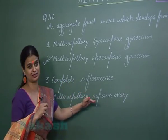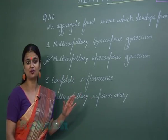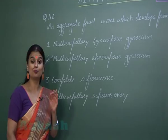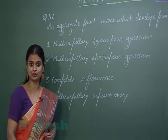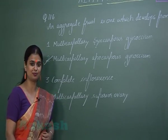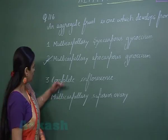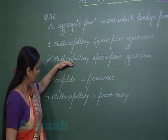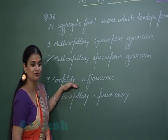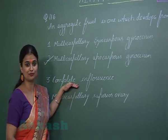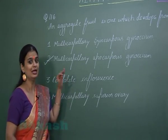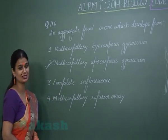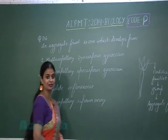The third option refers to a complete inflorescence. The fruit formed from a complete inflorescence is known as a composite fruit or multiple fruit. So for aggregate fruit, one example is strawberry, and for a fruit formed from a complete inflorescence, the example is fig. Let's proceed to question number 117.